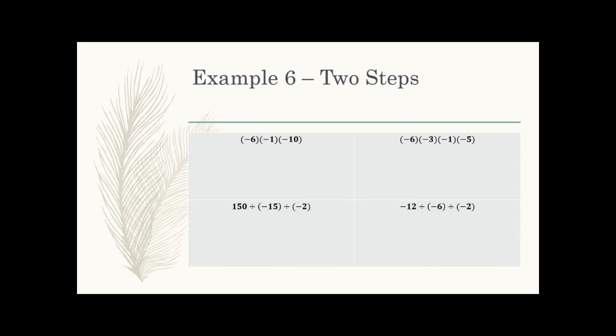Now some more complex examples using all the basic rules. Top left: negative six times negative one times negative ten. Three negative signs — that's odd, so the answer is going to be negative. I do six times one first, which is six, then six times ten, which is 60. So the answer is negative 60. You could also do six times one times ten in one step.